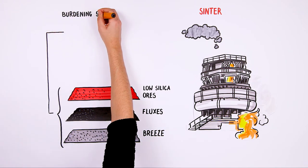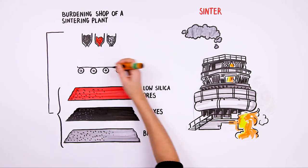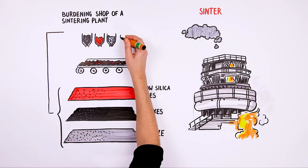These components are measured in appropriate proportions in the burdening shop of a sintering plant, and then fed on a sintering belt where sinter is produced.